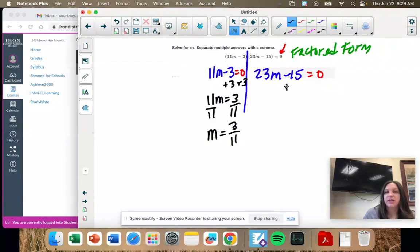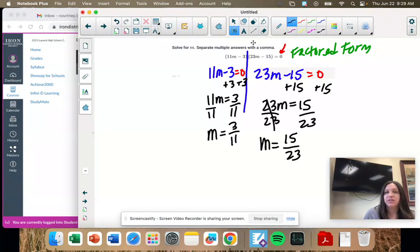Then for this side, we're going to start by adding 15. And then divide both sides by 23.